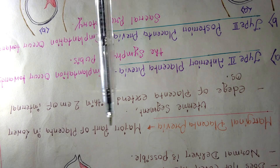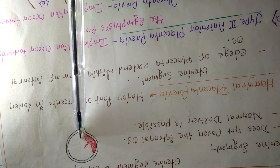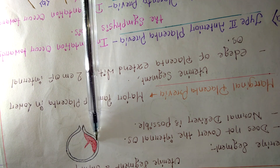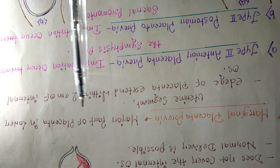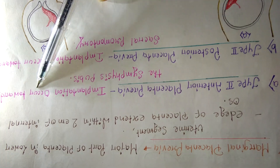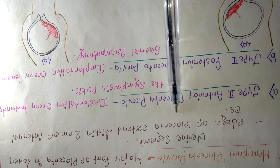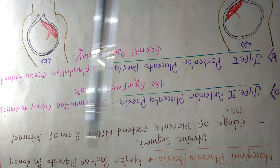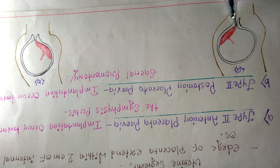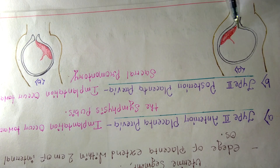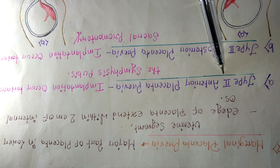The second type is marginal placenta previa. In this type, the major part of the placenta is in the lower uterine segment and a small portion is in the upper uterine segment. The edge of the placenta extends within two centimeters of the internal os, partially covering but not fully covering the cervix.